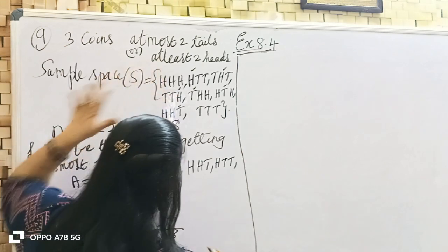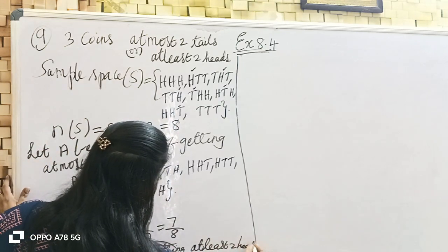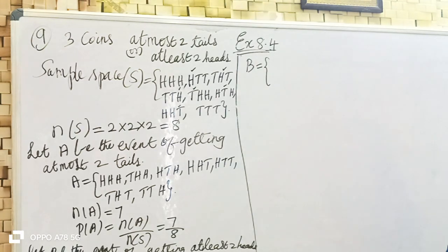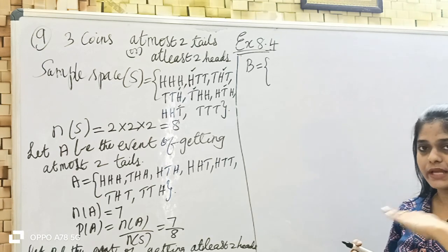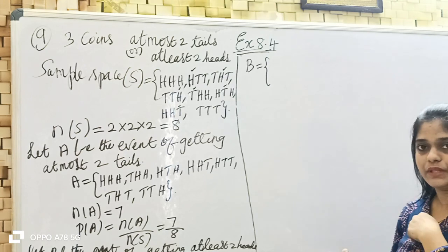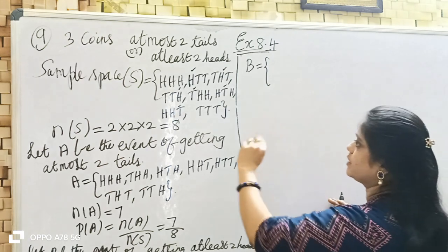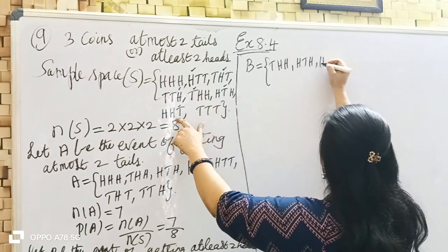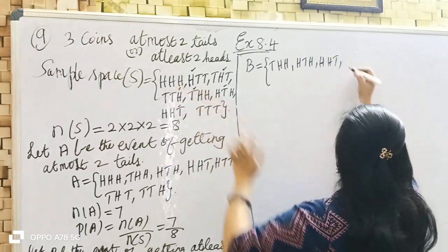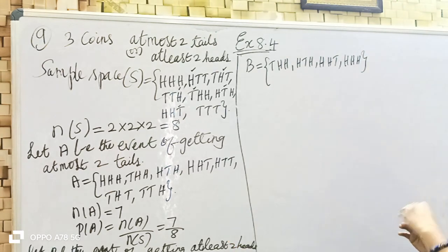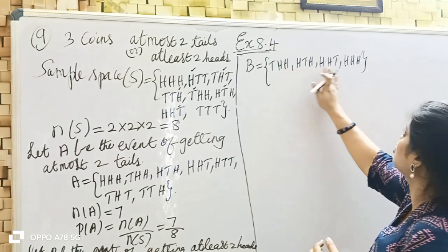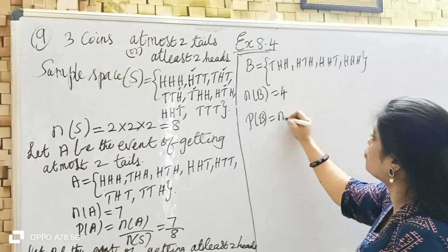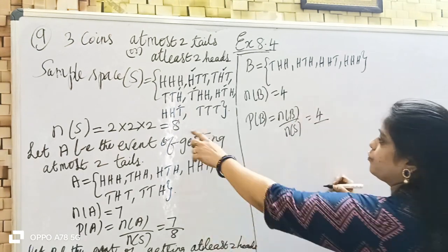For getting at least two heads — 'at least' means minimum, so starting from two heads: two heads or three heads. So at least minimum, starting from two heads and then three heads. N(B) is counted. P(B) = N(B) / N(S) = 4/8.